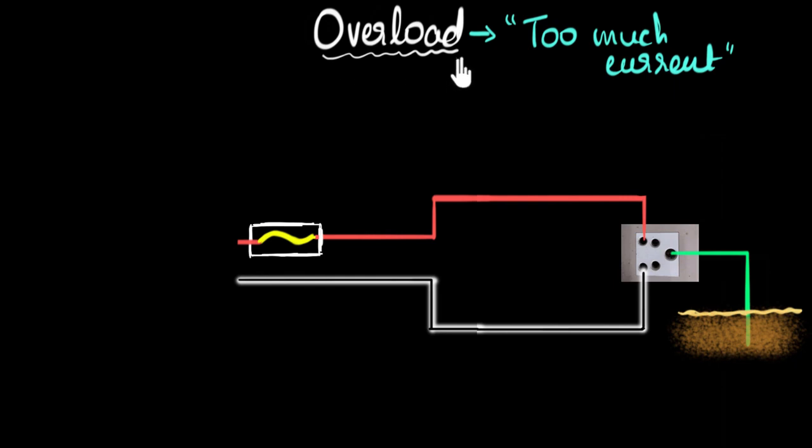Okay, so we understood what overload is, but the question could be, what causes this overload, right? What causes too much current to flow in our circuit? Well, there could be multiple reasons for that. So one of the reasons could be, let me just write that down over here. One of the reasons that causes too much current is basically too much voltage. Too much voltage.